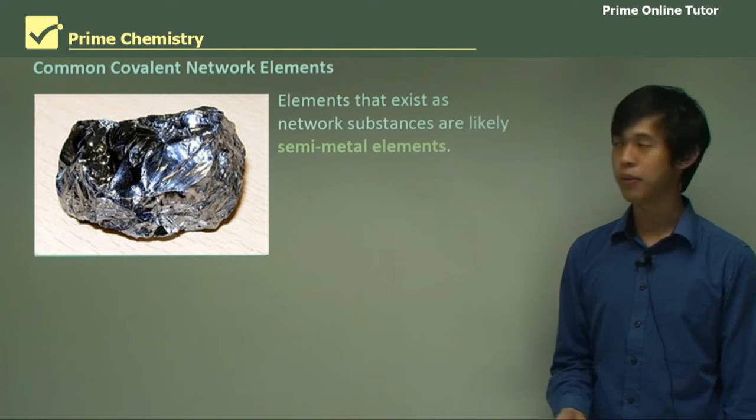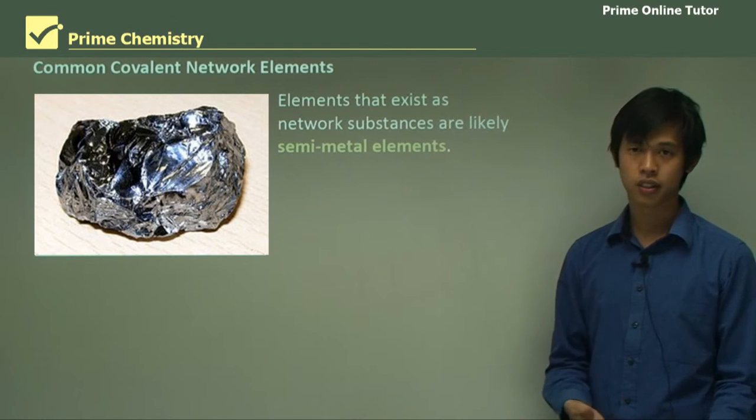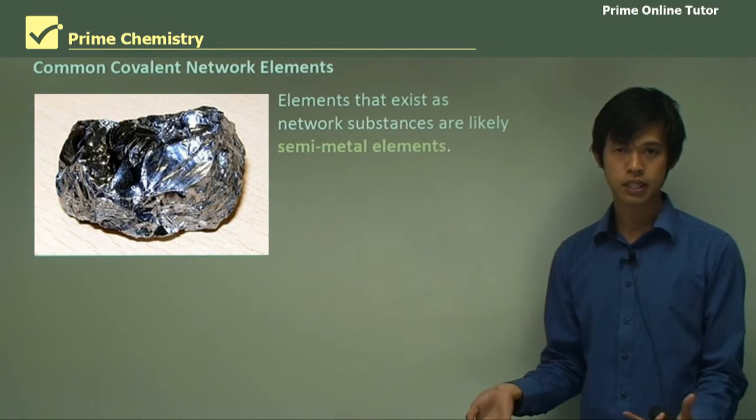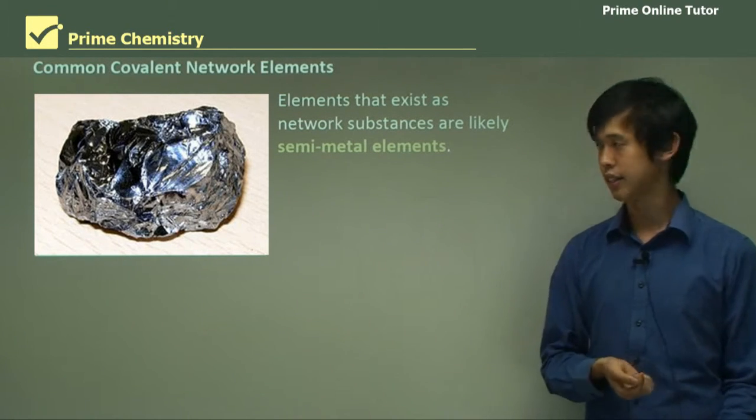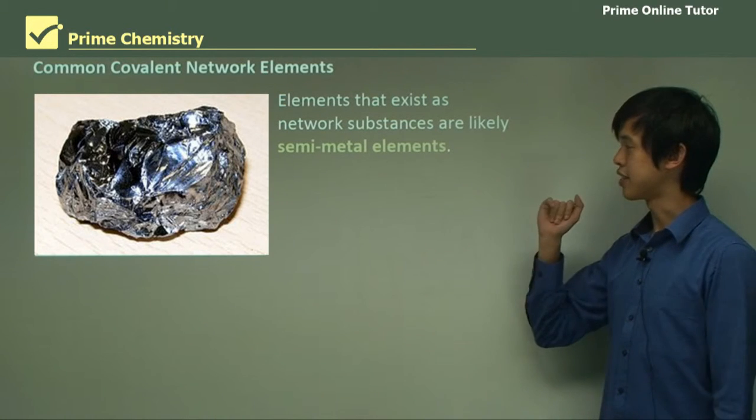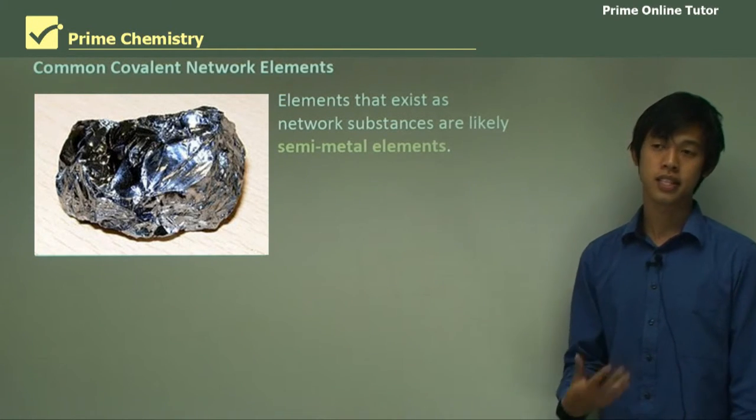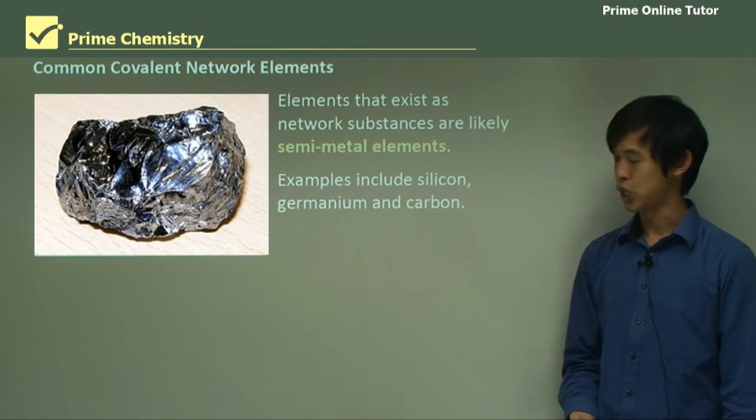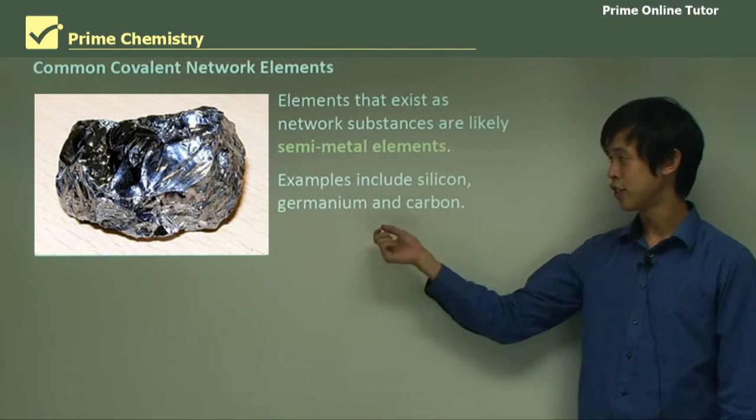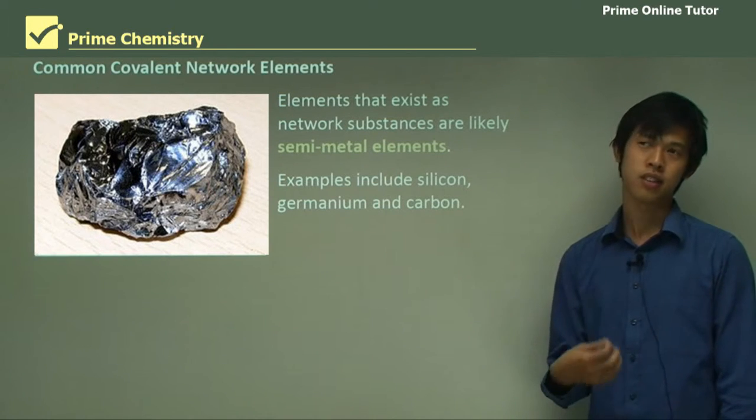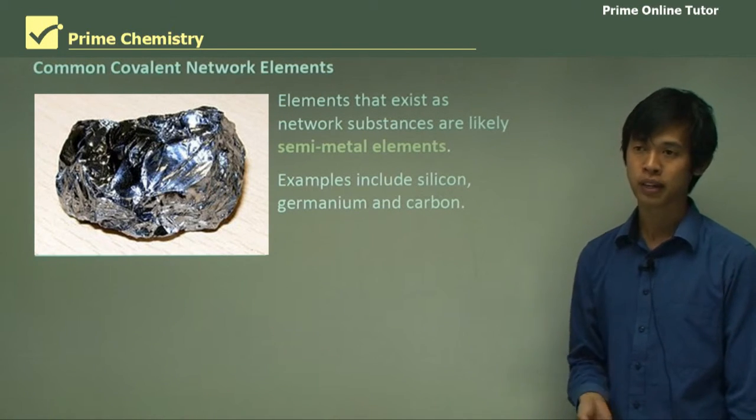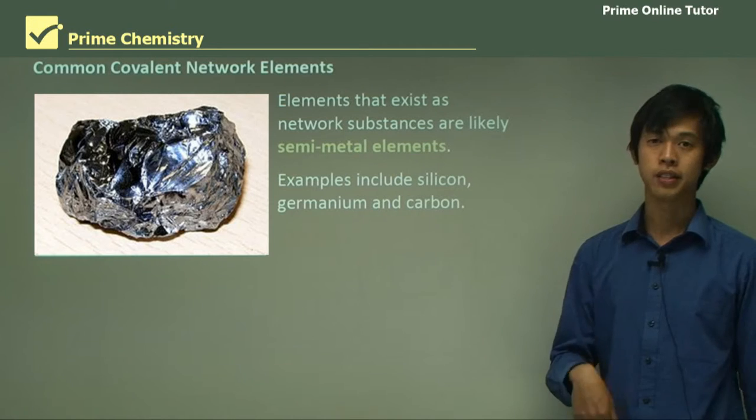So what about covalent network elements? We saw a lot of covalent molecular substances, but what about a covalent network element? So elements that exist as network substances are likely to be semi-metal elements. So you could put things in like silicon, germanium, or carbon. Carbon is not necessarily a semi-metal, but it does act like this as well.